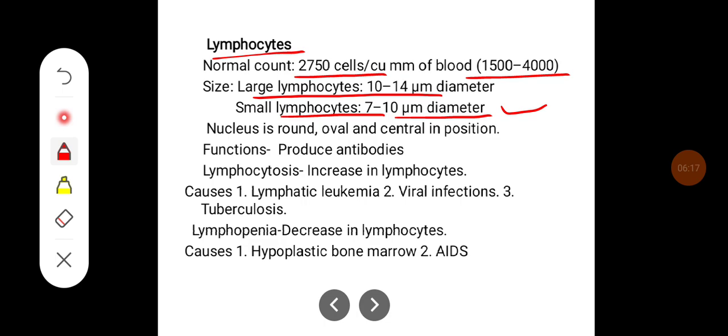Nucleus of lymphocyte is oval and central in position. Some important functions of lymphocytes: they produce antibodies.